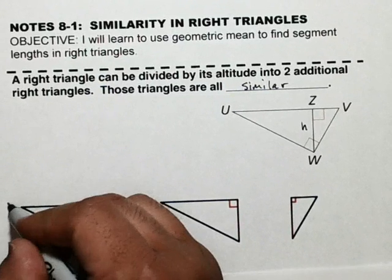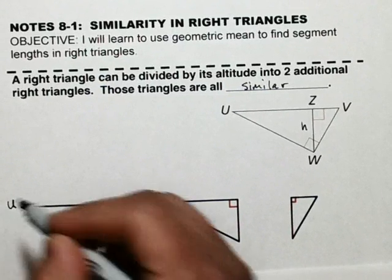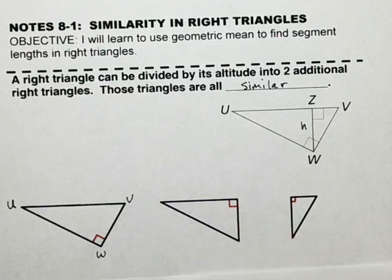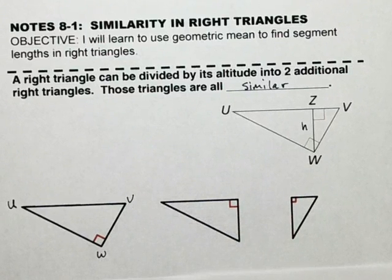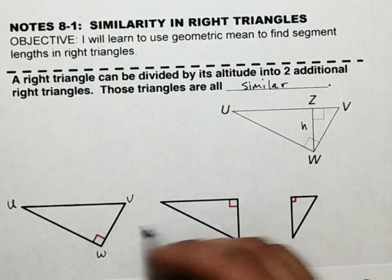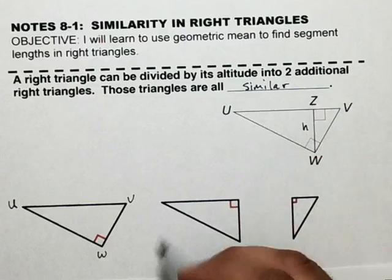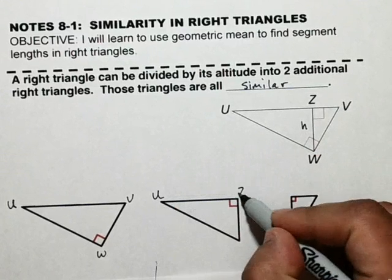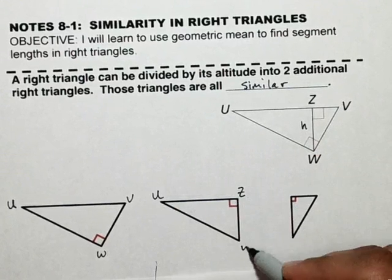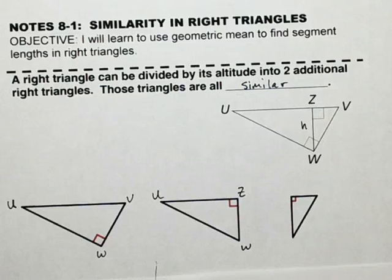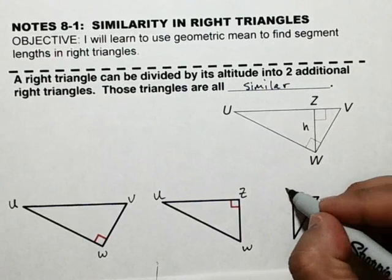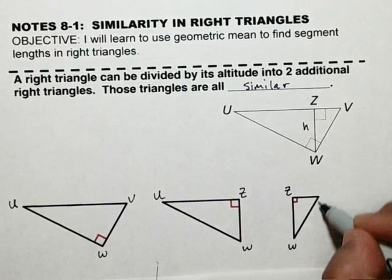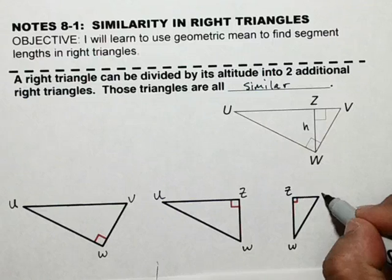My big triangle would be UWV. Then I have this medium-sized triangle that's going to be UZW. And then a small triangle ZWV.